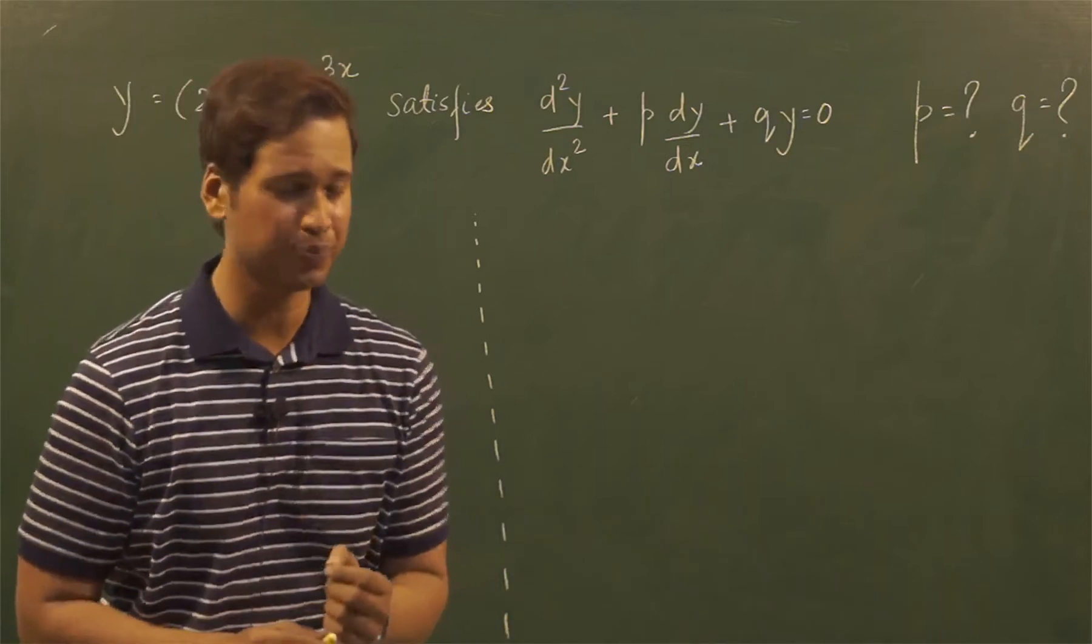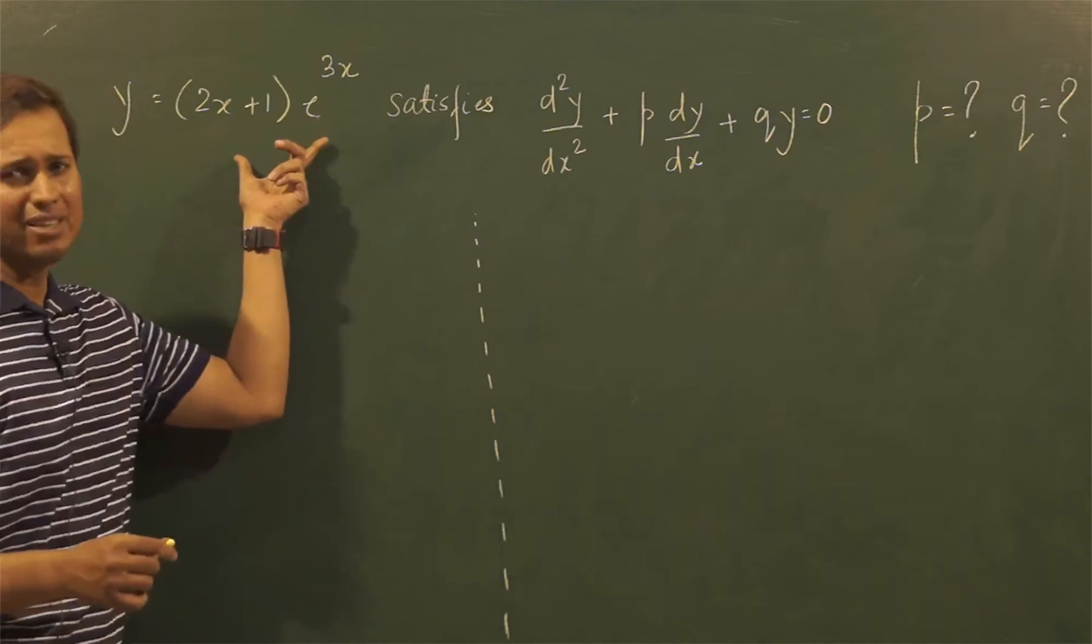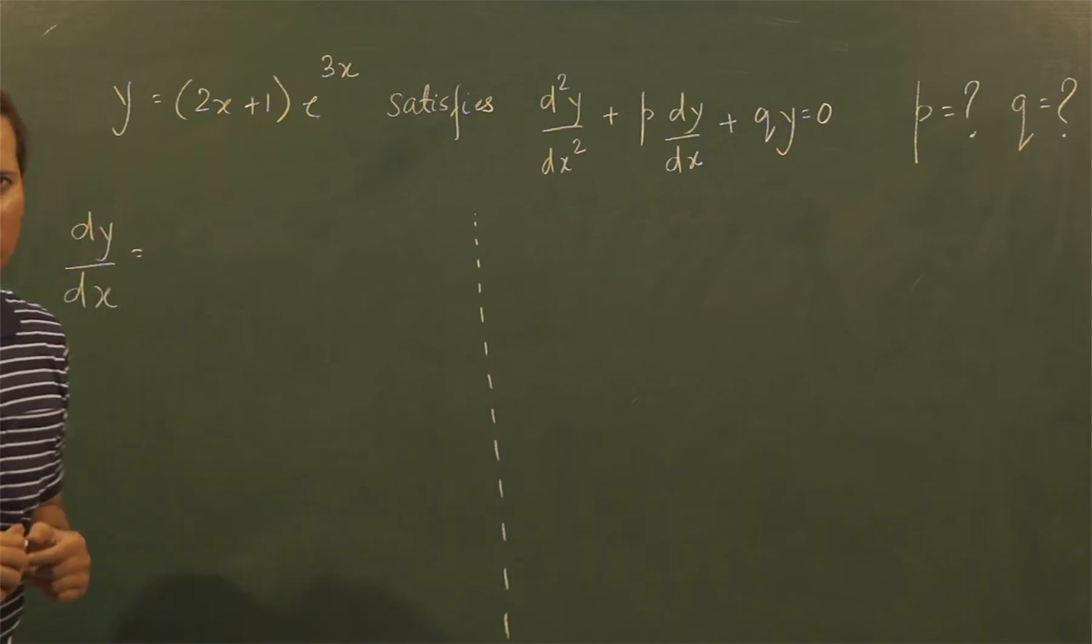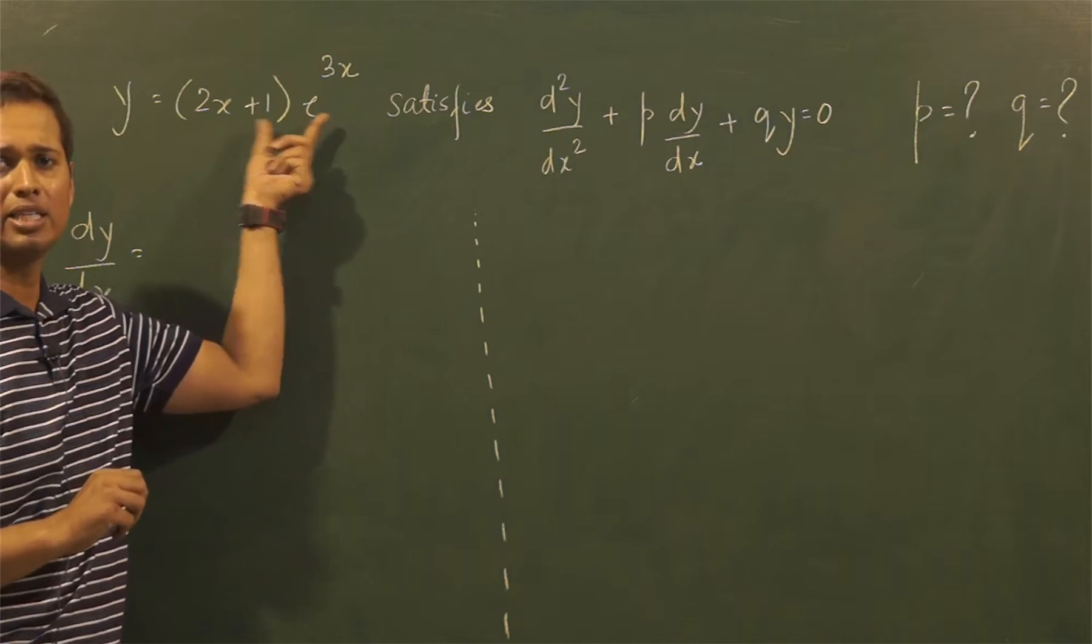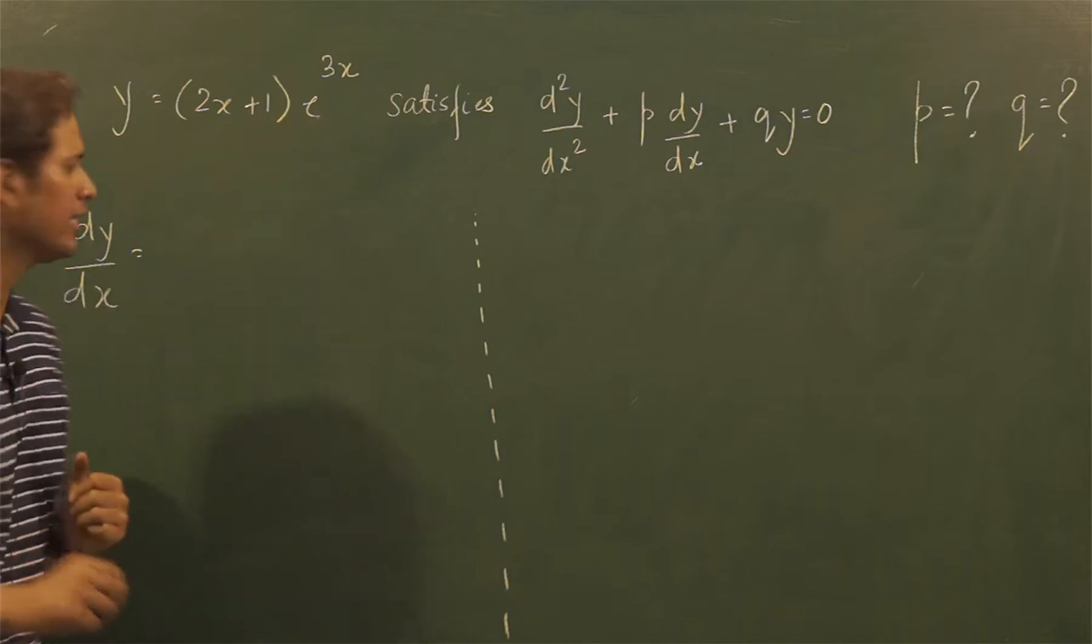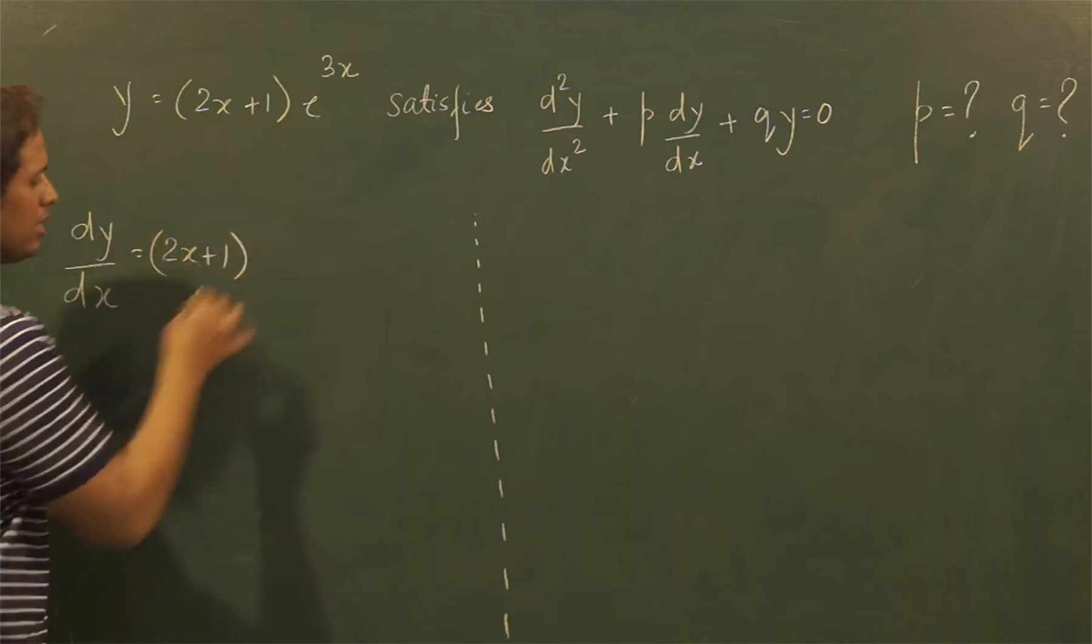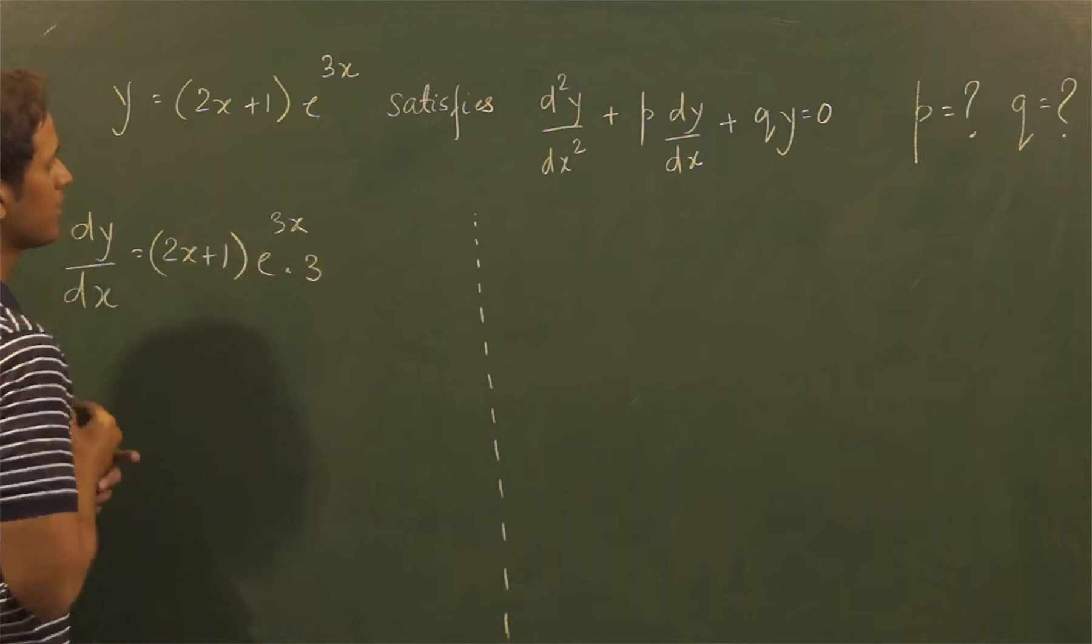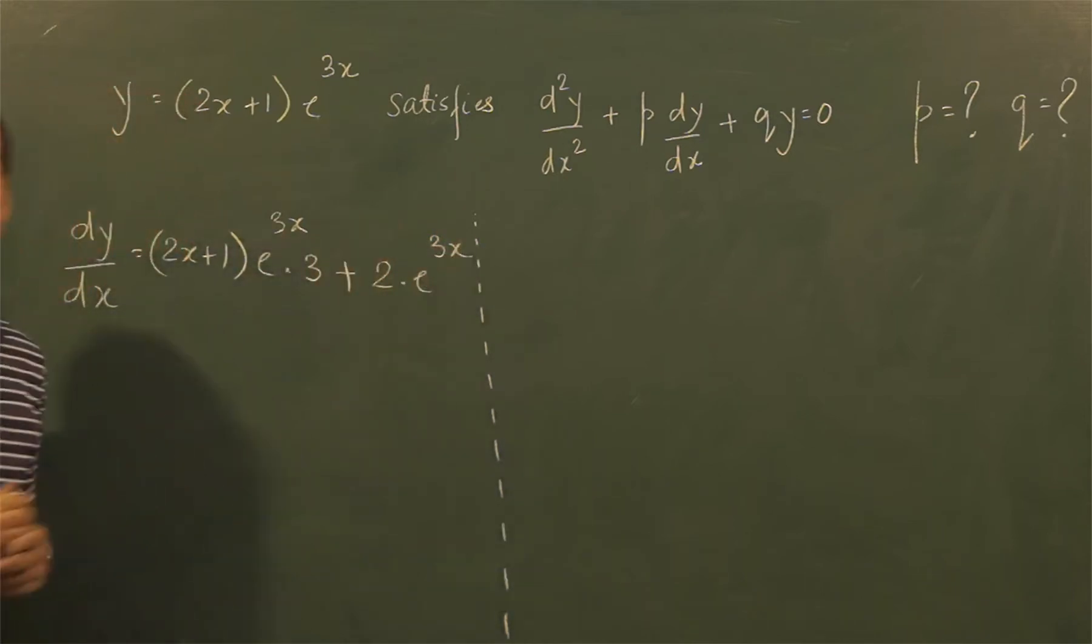Now let us start by finding the derivative of this function. So let us find dy/dx. dy/dx can easily be found out by using the product rule. So we have two functions which are multiplied. If I use the product rule on it, I'm going to get (2x+1)e^(3x) times 3 plus 2 times e^(3x).